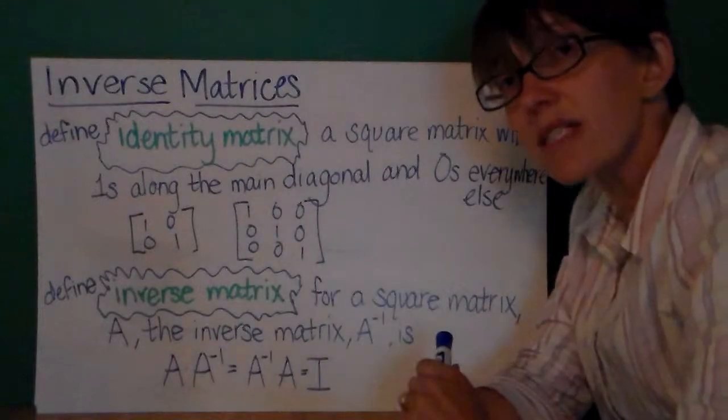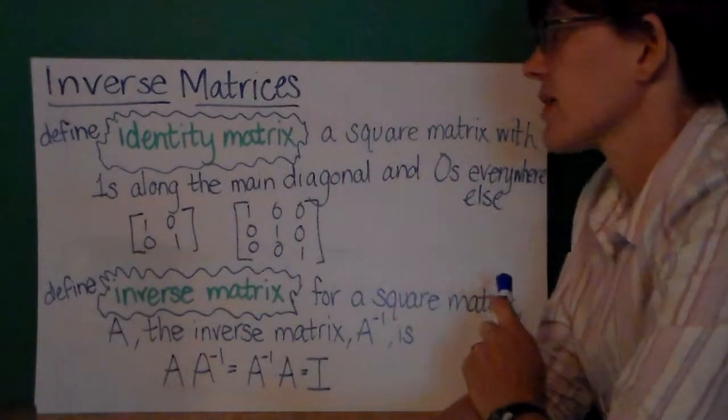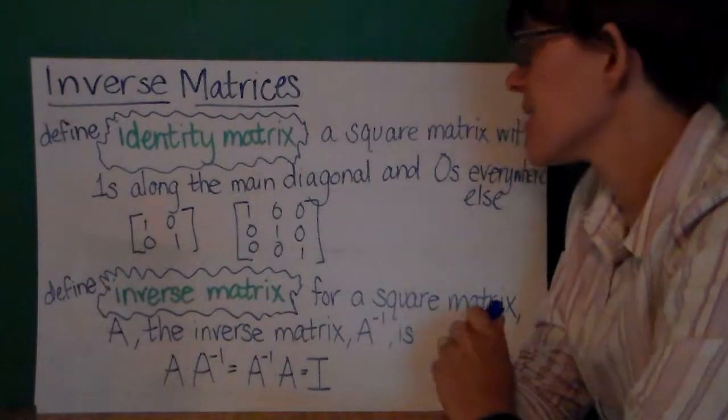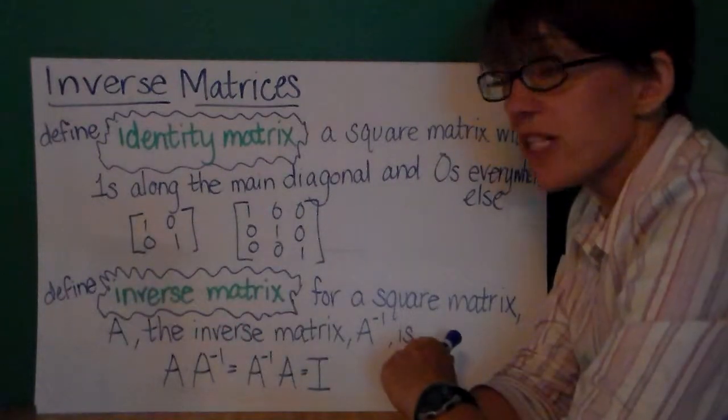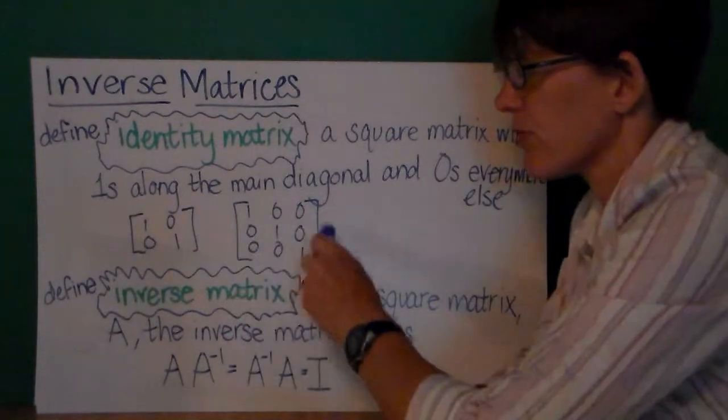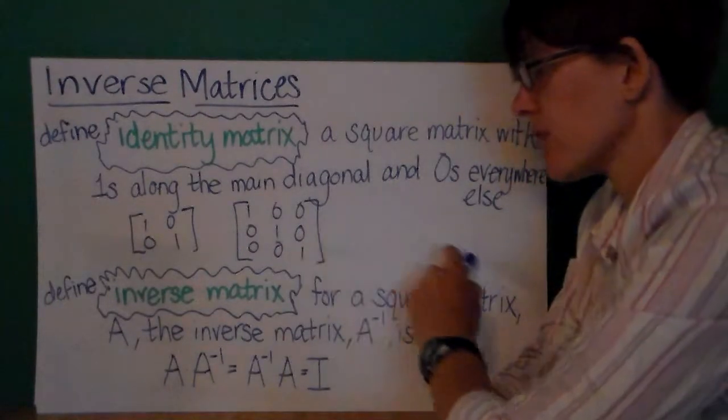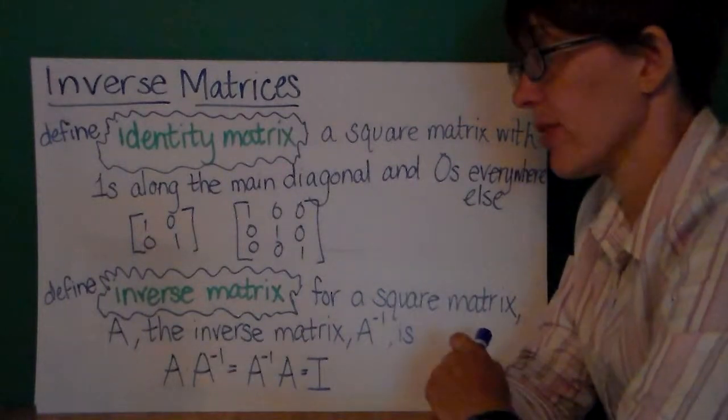So first let's define what is the identity matrix. The identity matrix is a square matrix and it has ones along the main diagonal and it has zeros everywhere else. So here's an example. This is the 2 by 2 identity matrix. Here's the 3 by 3 identity matrix. The 4 by 4 identity matrix would have four ones along the diagonal and zeros everywhere else.